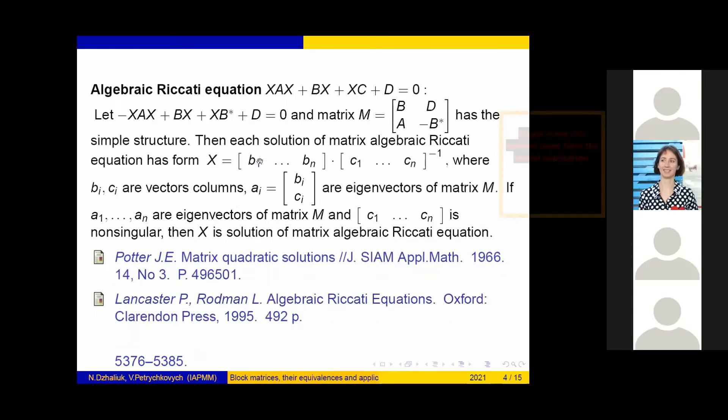One of the methods of solving the algebraic Riccati equations proposed by Porter also uses block matrices. Here, the block matrix M is constructed from the coefficients of the matrix algebraic Riccati equations of this form.